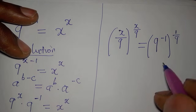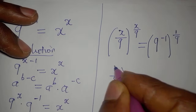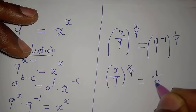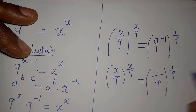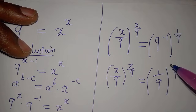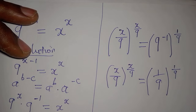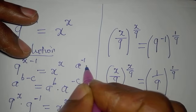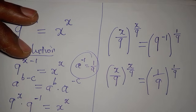Now, 9 to the power of negative 1 can be written as 1 over 9, raised to the power of 1 over 9. This follows the law of indices: a to the power of negative 1 equals 1 over a.